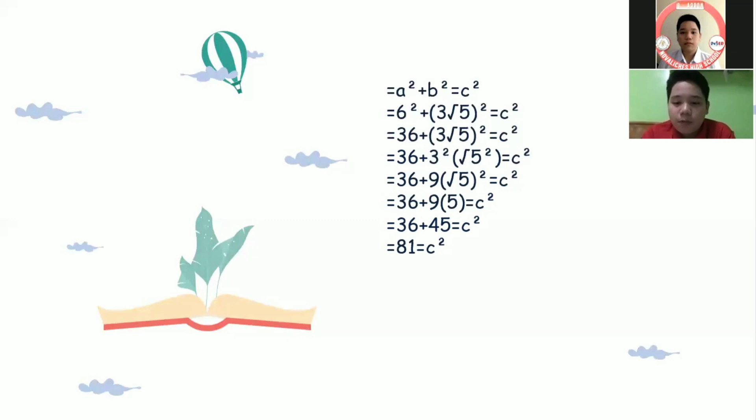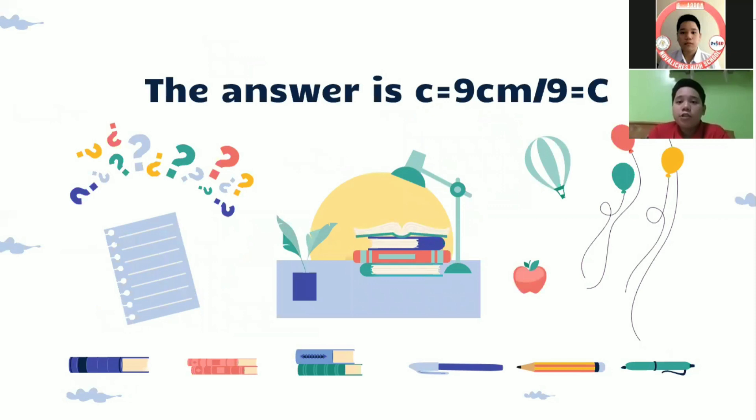Lastly, we need to transform these terms into a root having square root of 81 equals square root of c squared. We just need to evaluate this for the last time. And our answer will be c equals 9 centimeters or 9 equals c.